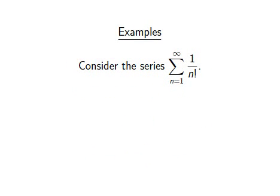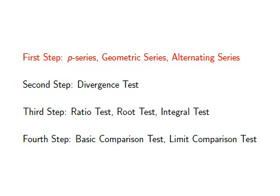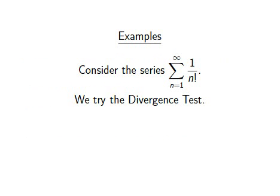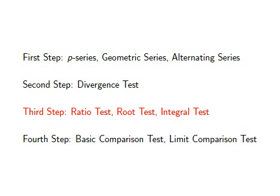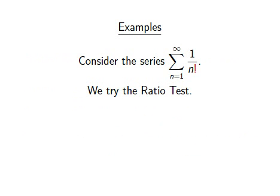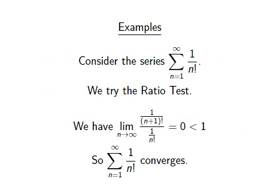Now consider the series of 1 over n factorial for n ≥ 1, and let's say we don't know what to do. We first check if the series is a p-series, geometric series, or alternating series — it is none of those — so we move to the divergence test. However, this test fails and so we need to try a different test. Among the tests in the third step, I choose the ratio test, as there is a factorial in the underlying sequence. According to this test, our series converges. Of course, we could have tried the ratio test right away, and with more experience we probably would have. Practice and experience are very beneficial in making the right choice.